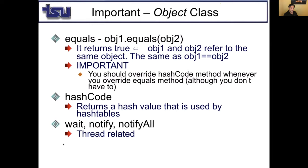Remember wait, notify, and notify all — they were all related to multi-threaded programming. When we have multiple threads, we could have a deadlock issue and we can solve it with wait, notify, and notify all methods. Finalize was used with garbage collection — whenever an object is no longer needed, Java marks it for garbage collection, and right before the object is deleted, finalize is called.